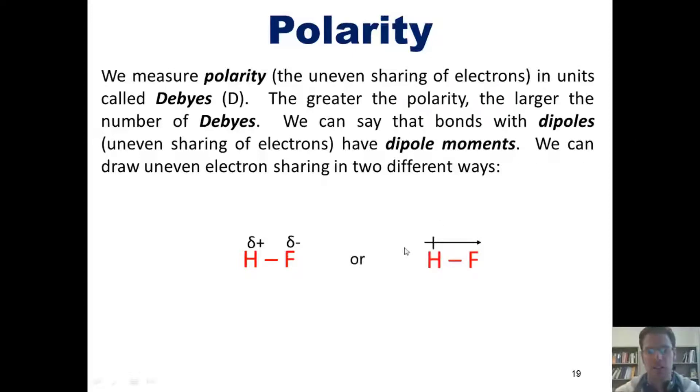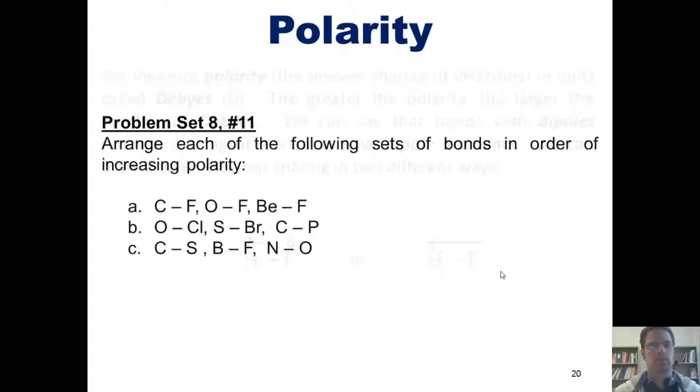Alternatively, we can just draw this symbol, a crossed arrow pointing toward the more electronegative atom, and thus the one that has the stronger negative partial charge. This brings us to this problem. I want you to arrange each of the following sets of bonds in order of increasing polarity. You're welcome to pause the video and attempt to do this on your own, because I'm going to show you the answer to one of these examples momentarily.